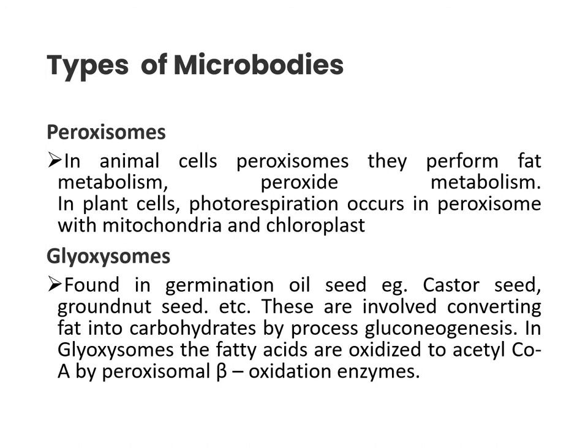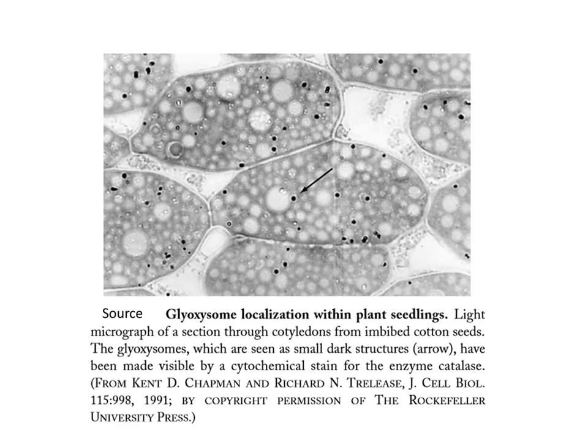Glyoxysomes are found in germinating oil seeds such as castor seed and groundnut seed. They are involved in converting fat into carbohydrates by a process known as gluconeogenesis. In glyoxysomes, fatty acids are oxidized to acetyl-CoA by peroxisomal beta-oxidation enzymes. This picture depicts glyoxysome localization within the plant seed layer.